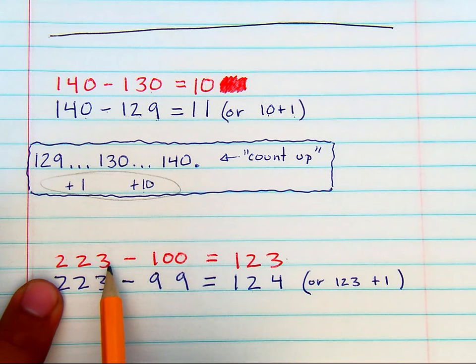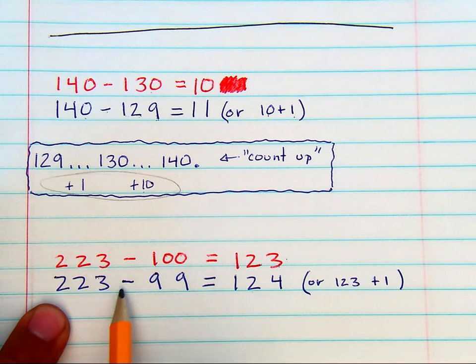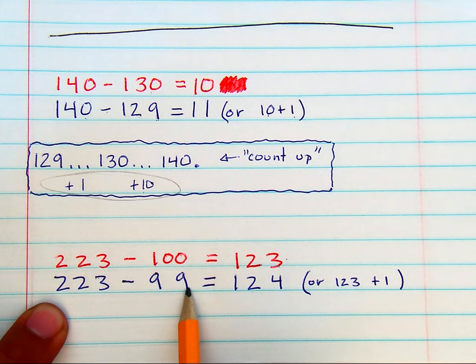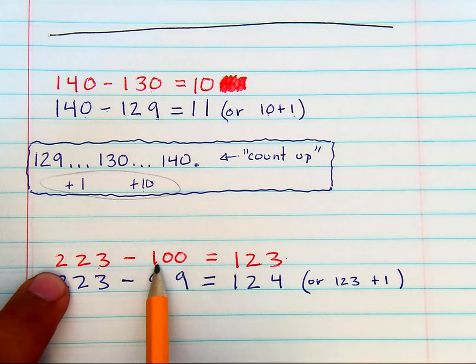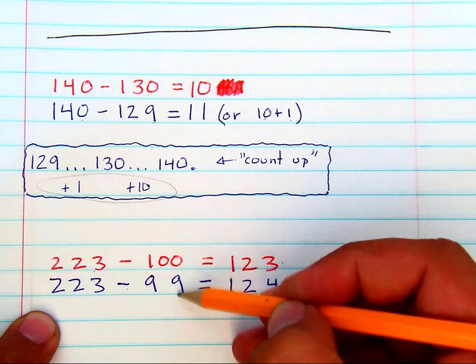223 minus 100 is easy, that's 123. But if you're going to subtract by a difficult looking number like 99, don't forget that the difference between 223 minus 100 and the difference of 223 minus 99, they're only one number apart.